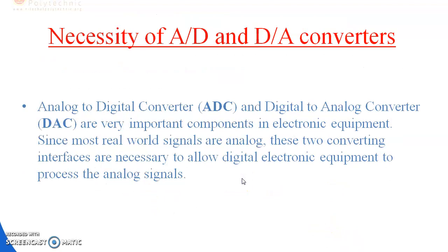The accuracy of analog-to-digital and digital-to-analog converters is very important. Analog-to-digital converters and digital-to-analog converters are very important components in electronic equipment. Since most real-world signals are analog, these two converters are necessary to allow digital electronic equipment to process analog signals.